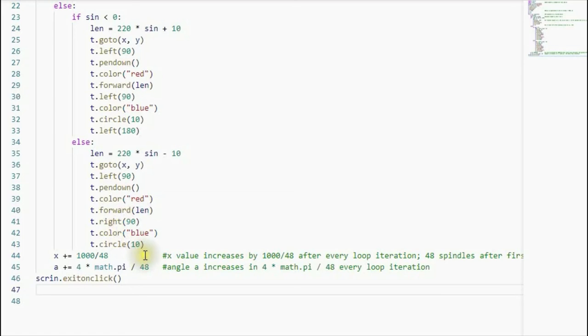Okay, you might be asking why is x here plus equal to 1000 over 48? This means that x increases by 1000 over 48 for every iteration. Why 48? Because there will be 48 representations of the spindles after the first spindle representation. And why is the angle here divided by 48? Because yes, there are 48 spindles after the first spindle. Now this is how the helix looks like here.